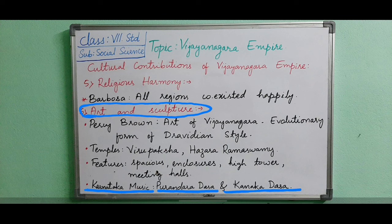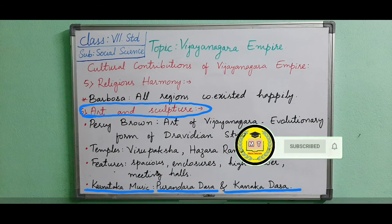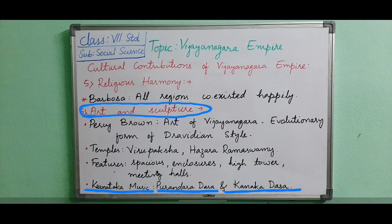Here we have completed the Vijayanagara topic. We have seen their contribution to literature, art, and religious harmony, and we came to know about the social status and economic system. Hope it is clear for you — if you have any doubt, you can ask in the comment section. Thank you.